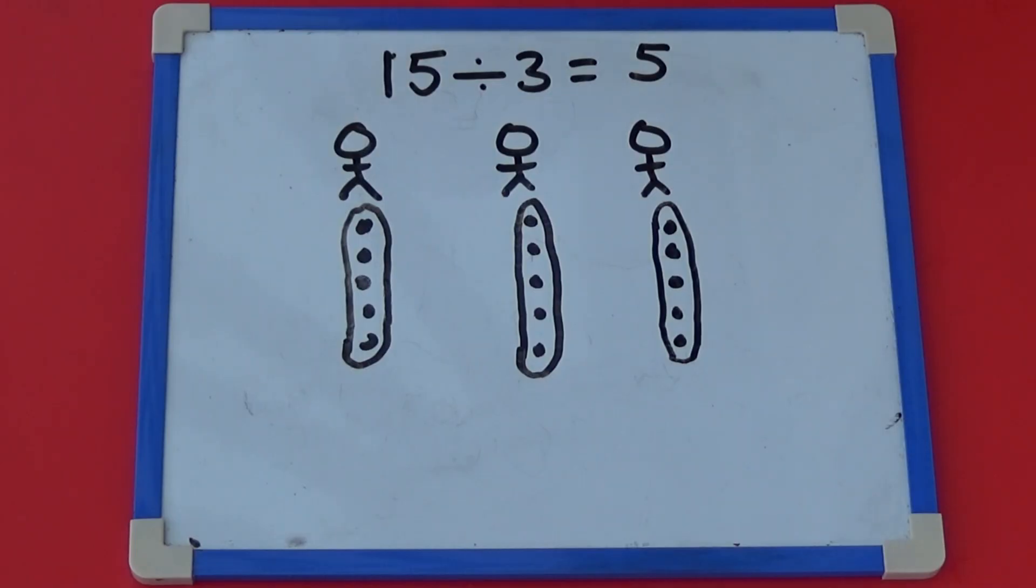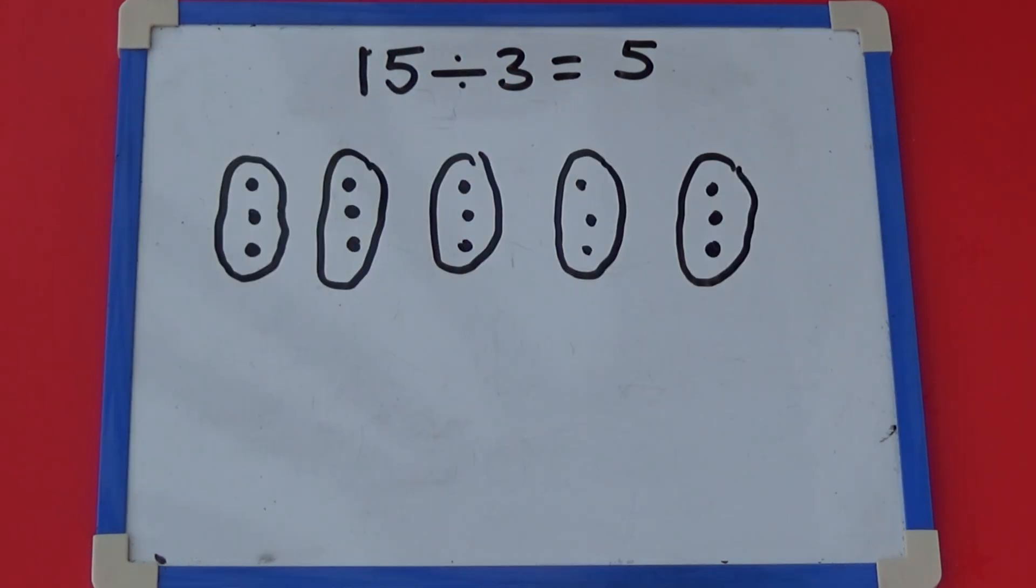Once you are confident working it out with counters, you can also record it as a picture. Here, our picture shows 15 shared between three people, giving each person five counters each. And here, our picture shows 15 divided into groups of three, giving five groups of three altogether.